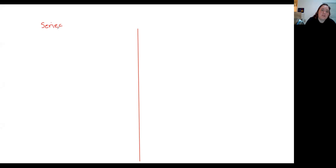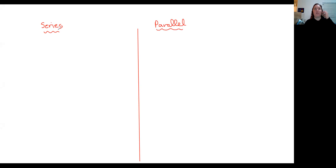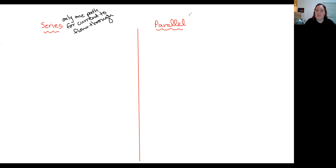I'm going to imagine dividing the page down the middle. On this side I'm going to be looking at what happens with series circuits, and on this side we're going to be looking at what happens with parallel circuits. When components are connected in series, the biggest thing is that there is only one path for the current to flow through. When we deal with parallel circuits, there are two or more paths for current to flow through.